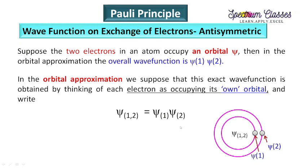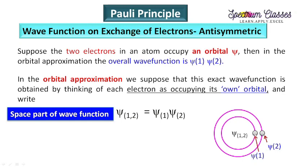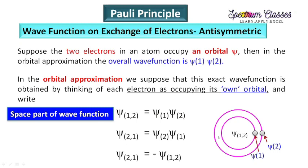This is the space part: psi(1)·psi(2). Since both electrons are identical and we cannot distinguish which is electron one and which is electron two, if we exchange the labels we get psi(2)·psi(1), represented as psi(2,1). If changing the labels changes the sign to negative, this is called an anti-symmetric wave function. If it does not change the sign, it is called a symmetric wave function.